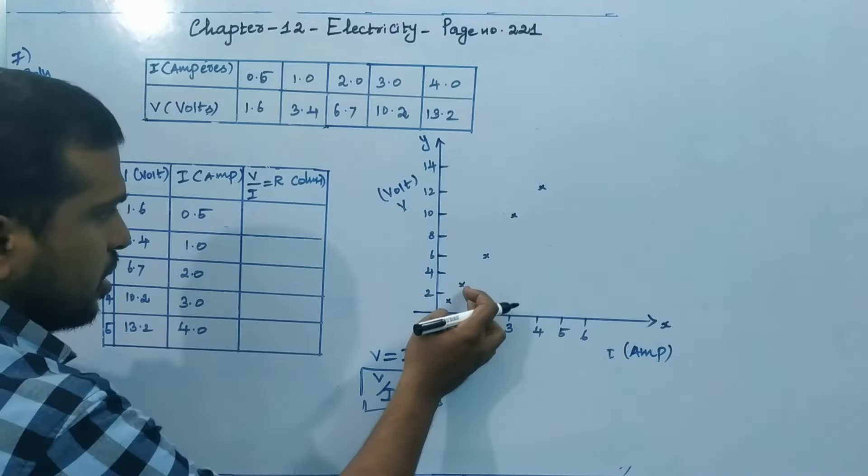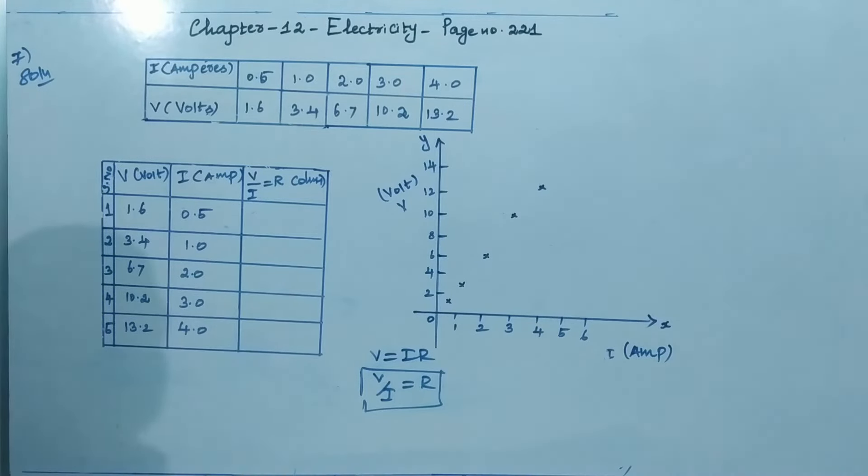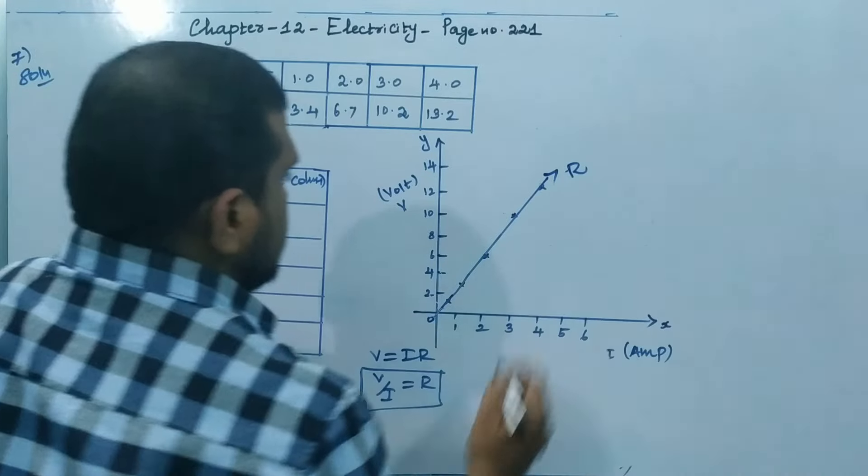So we have R1, R2, R3, R4, R5. Five resistances we have. So we can find out the mean resistance. Then we'll get the resistance of the resistor. Okay. This is given straight. This is nothing but resistance.